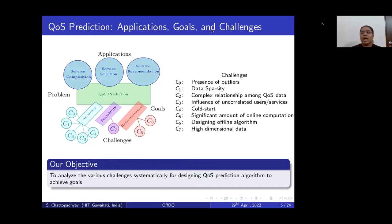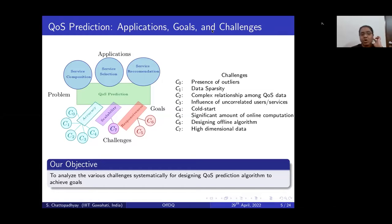The second problem is data sparsity. In the user-service QoS matrix, not all users have invoked all services, so we see many invalid entries. Due to sparsity, even memory-based collaborative filtering using similarity or deep learning mechanisms struggle to produce good feature vectors. We also need to capture complex relationships among QoS data. There is also the impact of uncorrelated user-service pairs on accuracy, and finally, cold start is a problem when new users or new services exist for which we have no historical information.